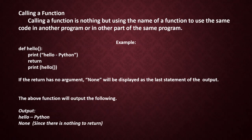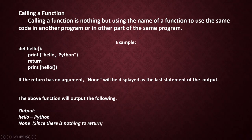For example, here we have: def hello, print 'hello python', return, print hello. The name of the function is 'hello'. When we call the function name — here in the print statement — this statement will be executed again and 'hello python' will be printed again. So calling a function means using the name of a function to execute that set of statements in another program or in another part of the same program.